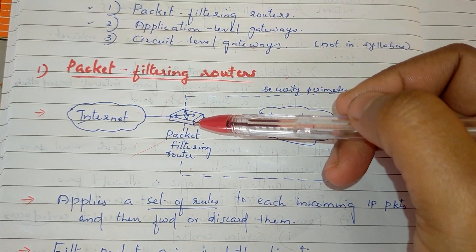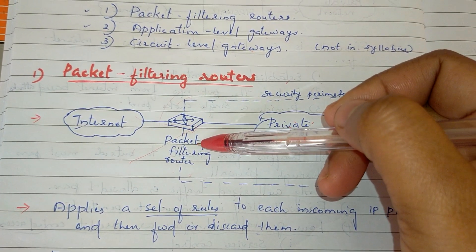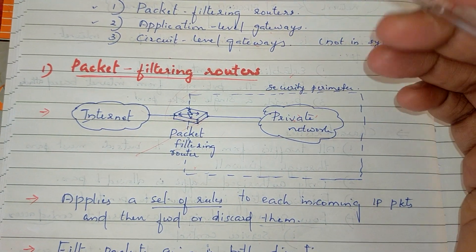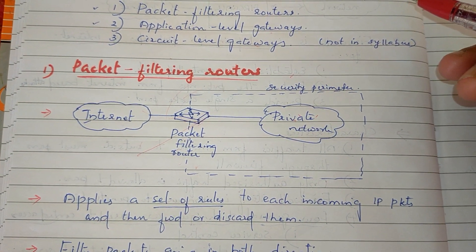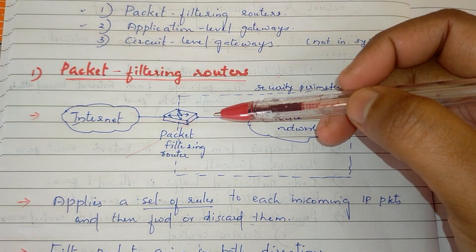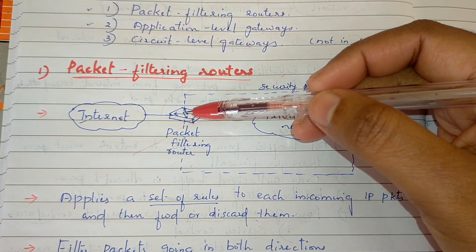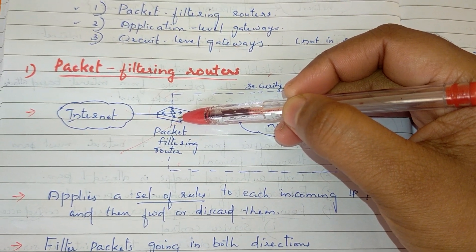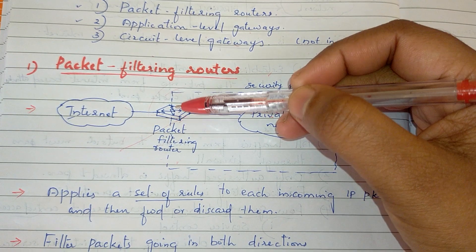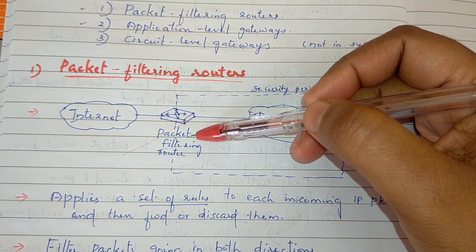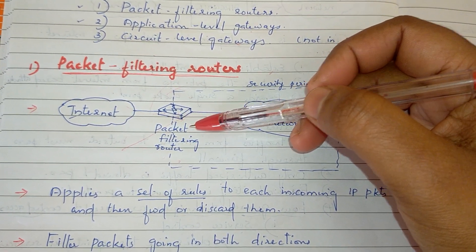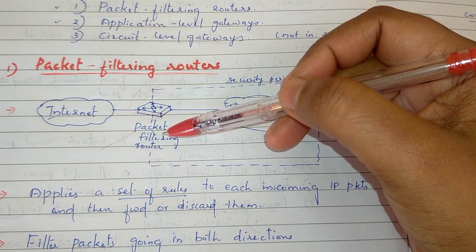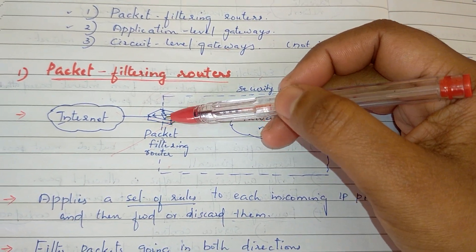So the two policies are: forward or discard. The packets are going to be handled in both directions. Packet filters are a list of rules based on matches to fields in the TCP header or IP header. In the IP packets, there are a few fields, and those fields are going to be matched against the rules.